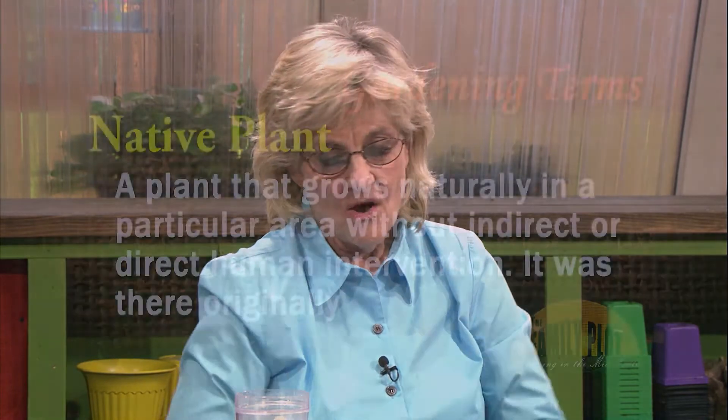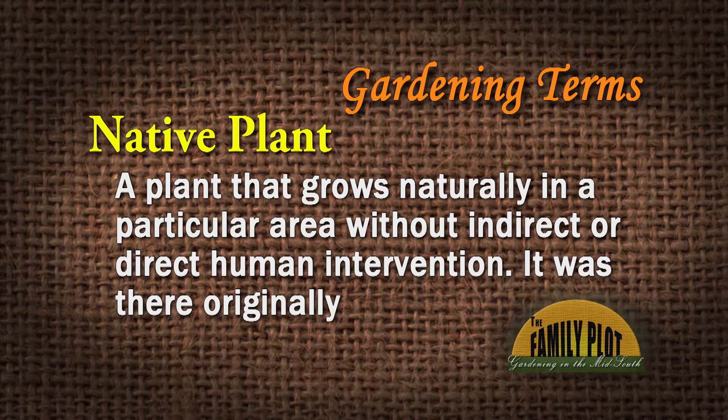Native plants — there's a lot of confusion about that. When do we say it's a native? A plant that grows naturally in a particular area, ecosystem, habitat, or region of the country without direct or indirect human intervention. When we talk about the eastern United States and native plants in the eastern part of the country, those are the plants that were here when the Europeans came — that's the standard definition of a native plant in the eastern part of our country.